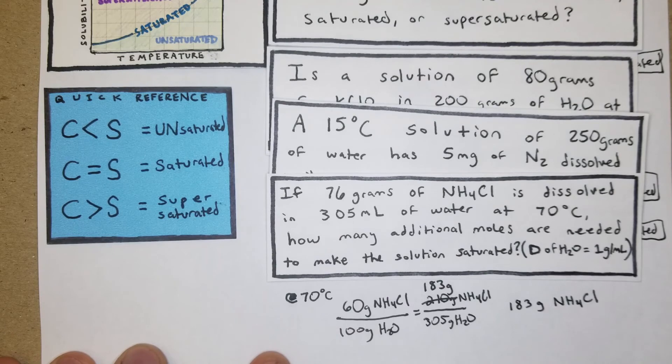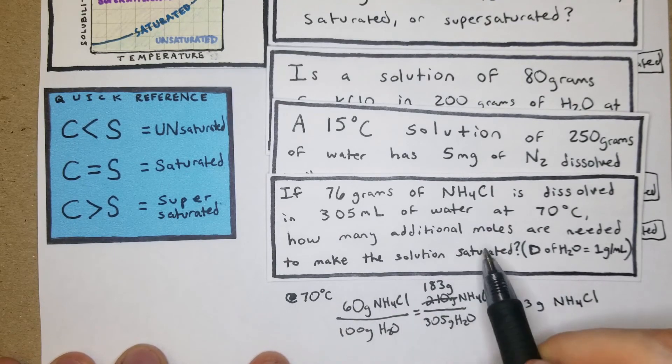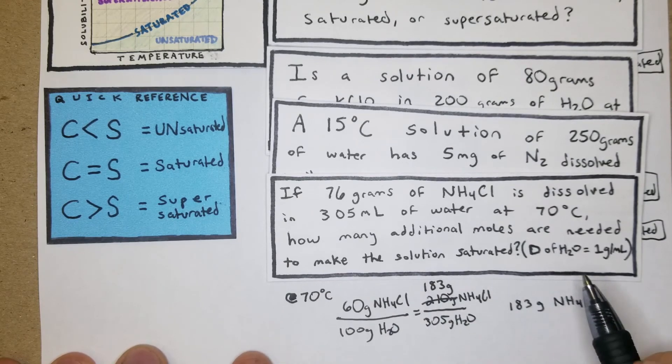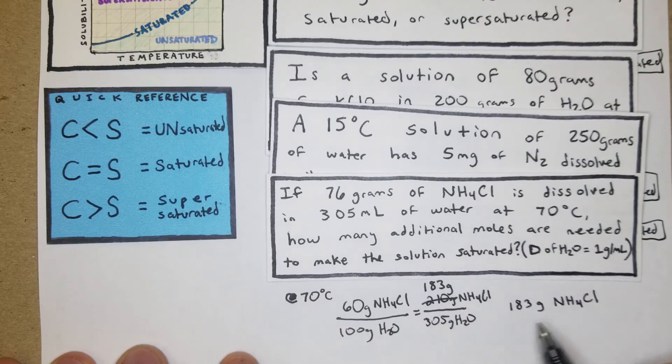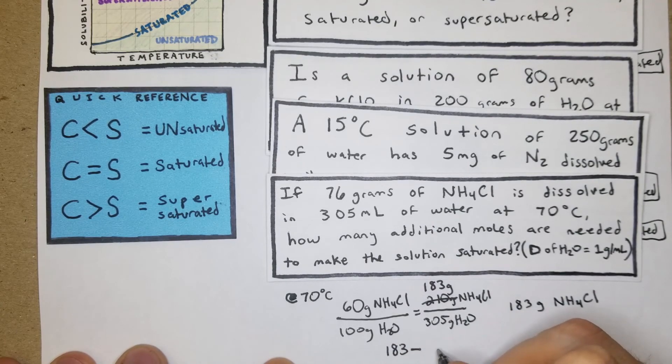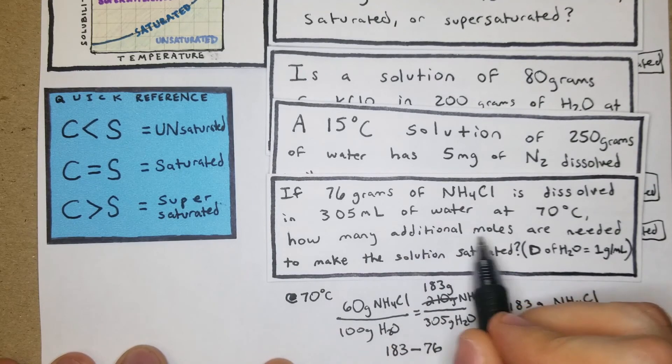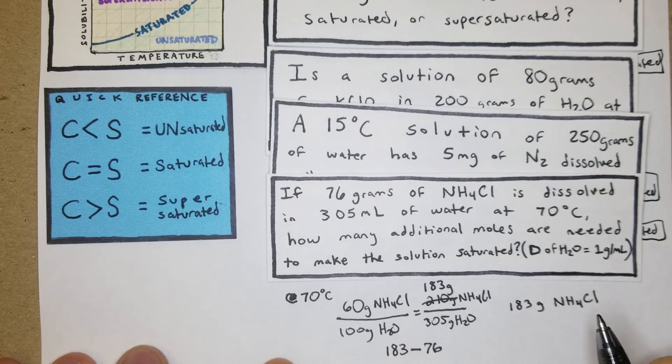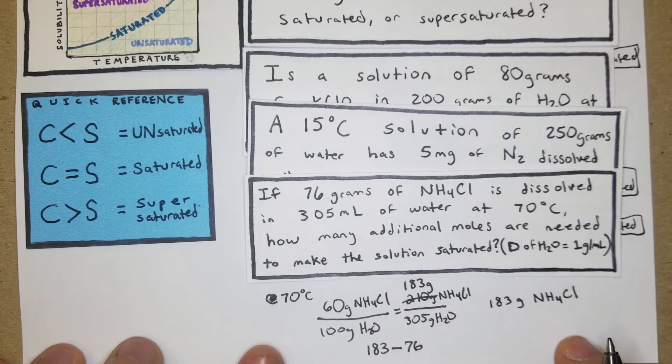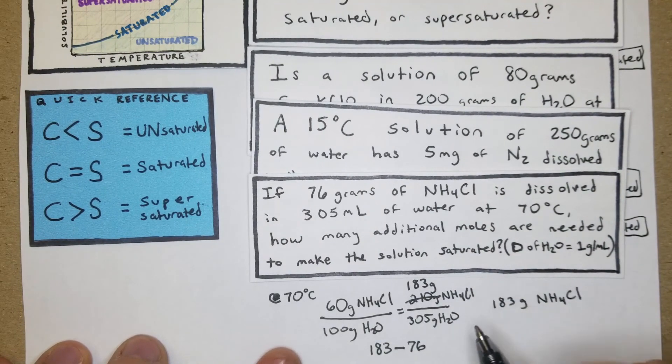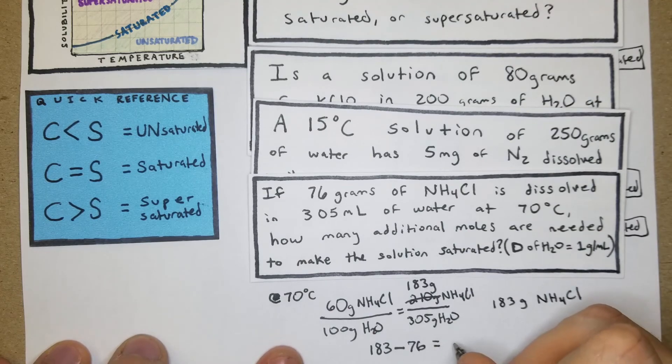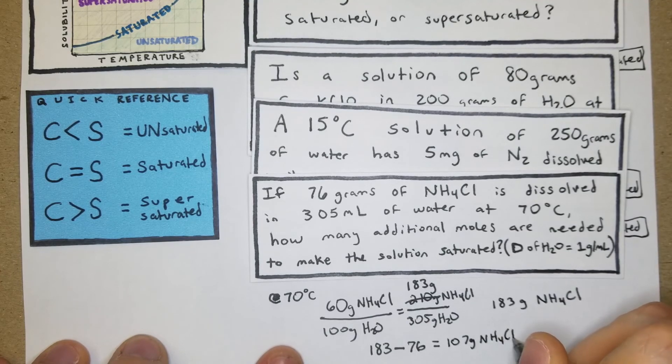What it's asking for is how many additional moles are needed to make the solution saturated. We just found what would be the number of grams that would make this solution saturated, so now we're going to convert that into moles. First off, we have 183 minus our 76 because that's how much there was before. It says how much additional moles, so that's kind of like a double trick question. 107 grams of NH4Cl.